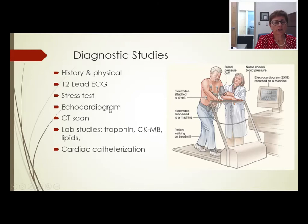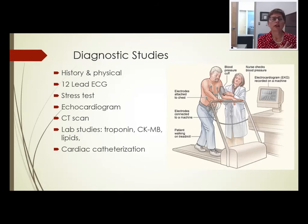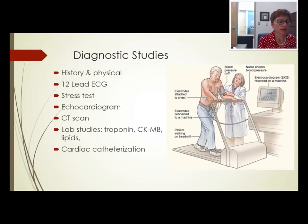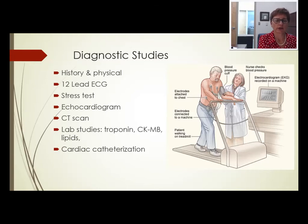They may also do an echocardiogram — an ultrasound of the heart — or a stress echo to check blood flow and coronary artery blockage. A CAT scan looks for calcium buildup. If someone comes into the ER with chest pain, lab studies including troponin, CKMB, and lipid levels are drawn. If any of these tests are positive, they will proceed to cardiac catheterization.